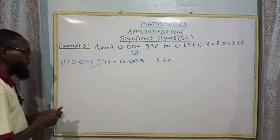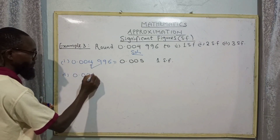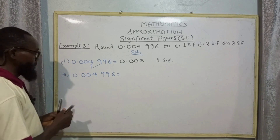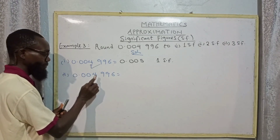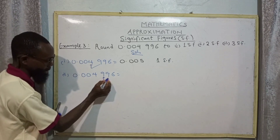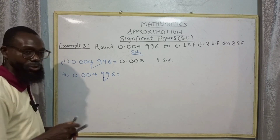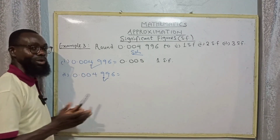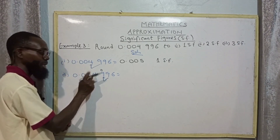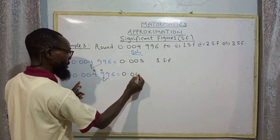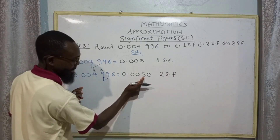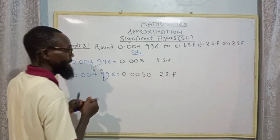For two significant figures in 0.004996: first SF is four, second SF is nine. Consider the digit to the right — nine. Nine becomes one, add one to nine making ten — write zero and carry one. Add the carried one to the first nine making five. So we have 0.0050 to two significant figures.